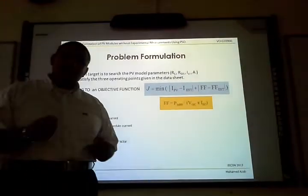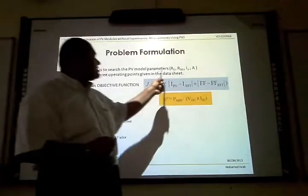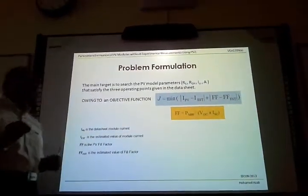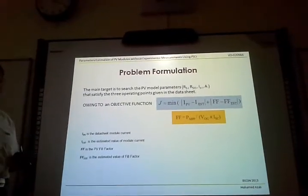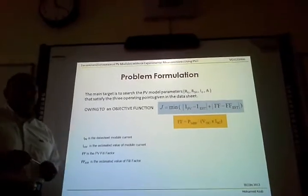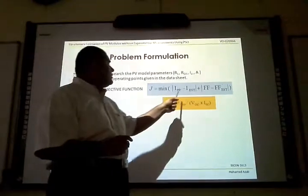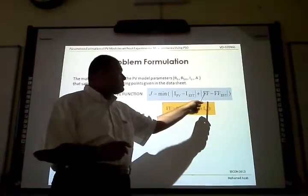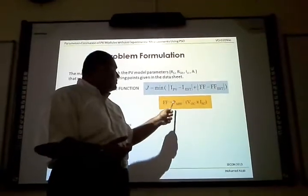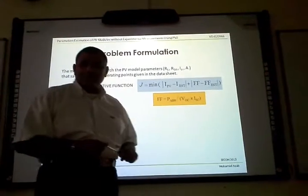The main target is to estimate the optimum values of PV module parameters: series resistance, shunt resistance, I_ph, I_o, and A that can satisfy the operating points given in the data sheet. To do this, we select a suitable objective function. In our work, the objective function is the difference between I_pv minus I_estimated, plus the difference between fill factors. Fill factor is defined as P at maximum power point over the multiplication of open circuit voltage and short circuit current.